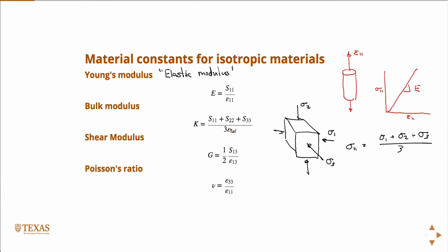That divided by the dilatation or the volumetric strain is the bulk modulus. It's defined as the hydrostatic stress, which is this, divided by the volumetric strain. So that's where the 3 comes from. This is the hydrostatic stress divided by the bulk modulus.